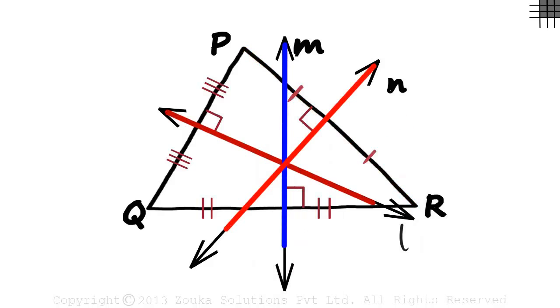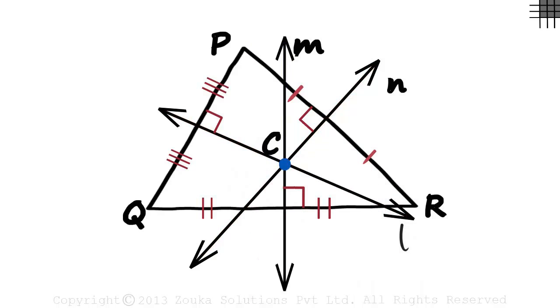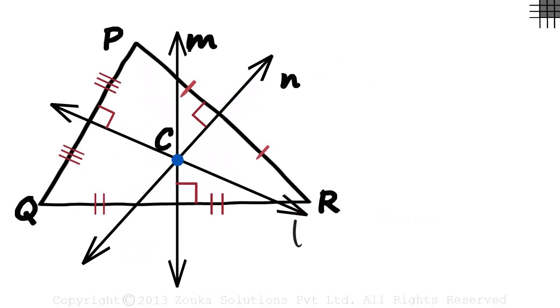So even the perpendicular bisectors of the triangle meet at point C, one single point. What is this point called? It's called the circumcenter.